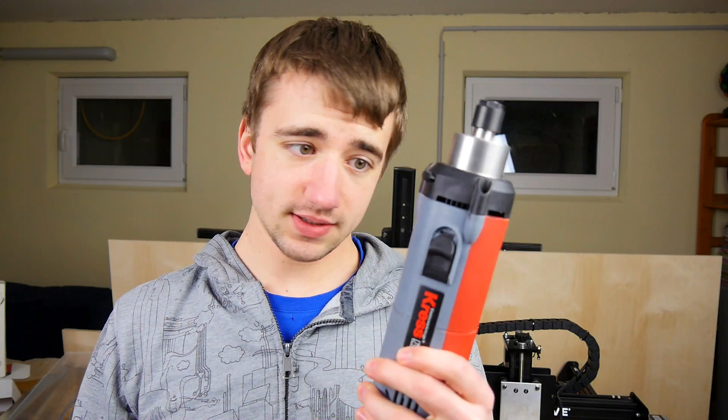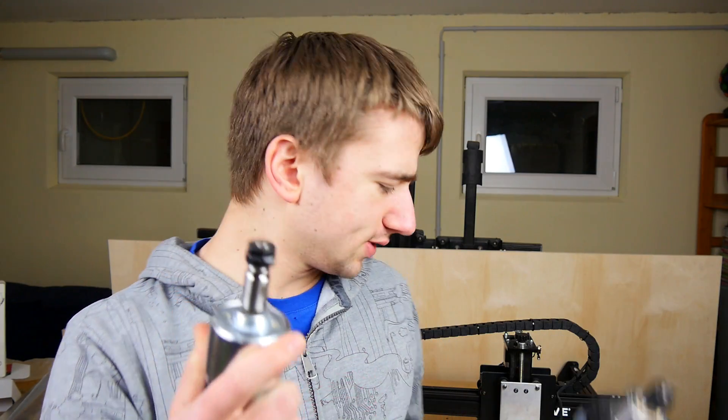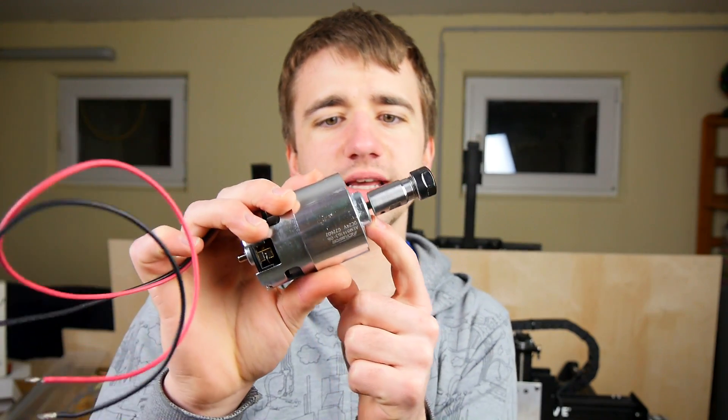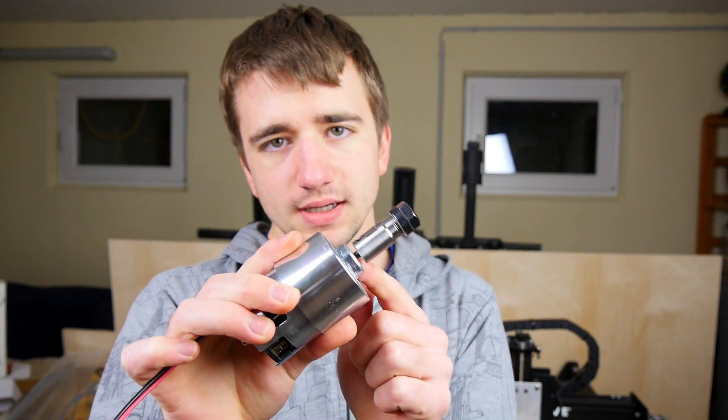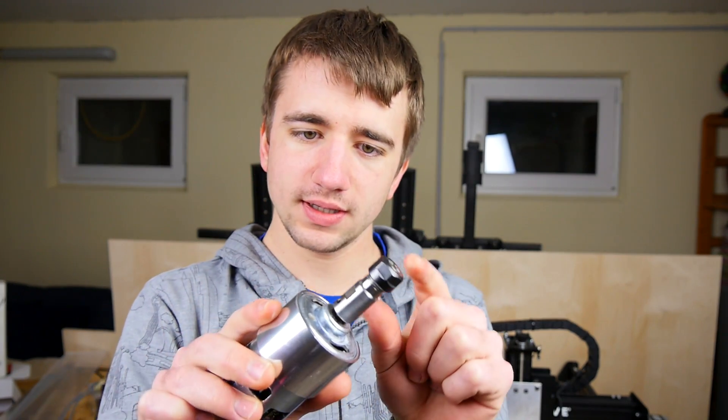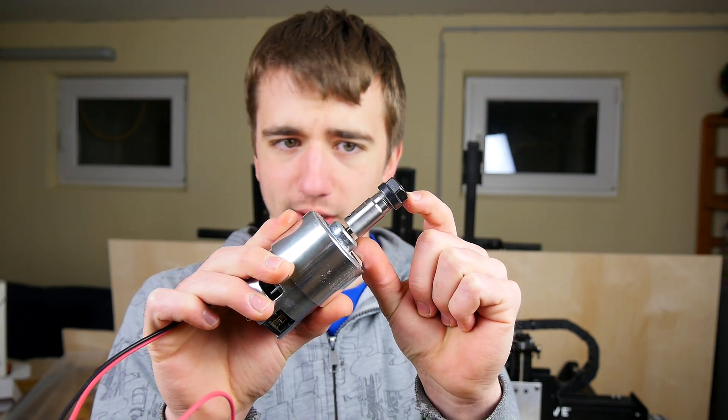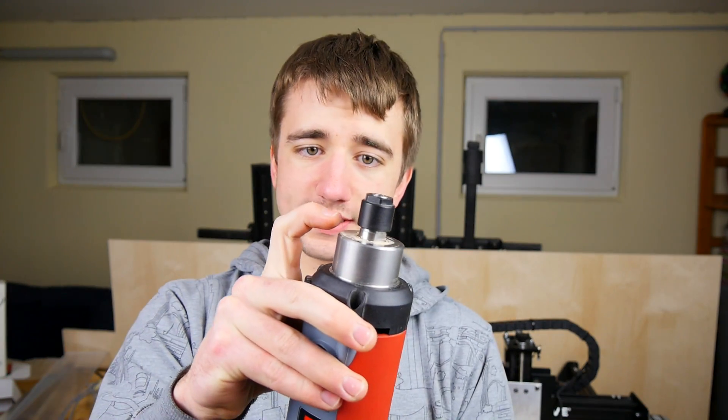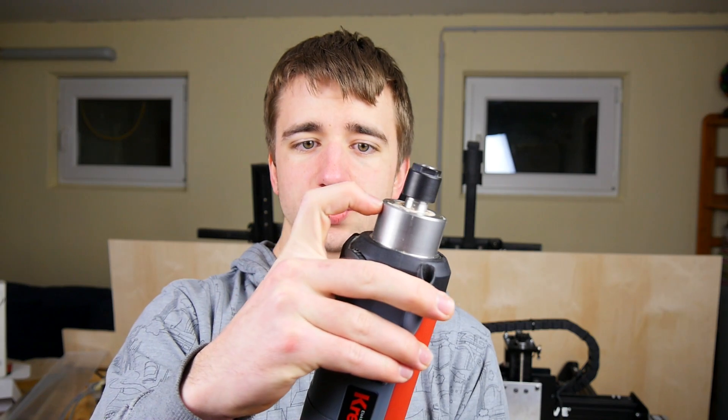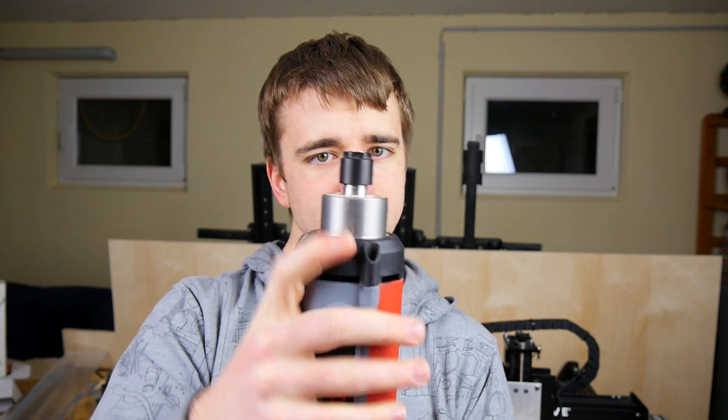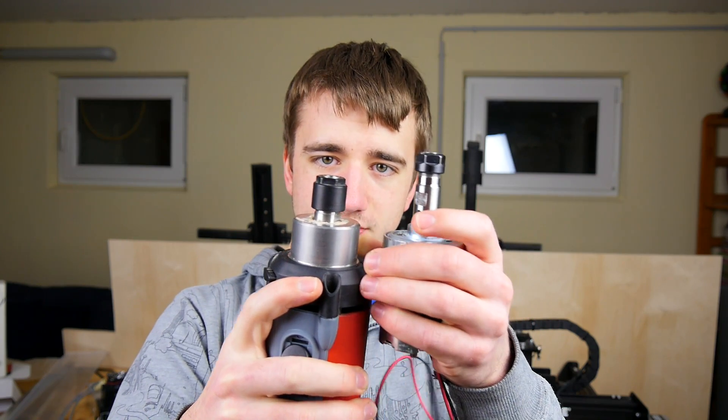The reason why this is so much better are pretty simple. Look at the shaft of this one - this is a tiny shaft like 5 or 6 millimeters with a tiny bearing. And then the distance from here to the chuck is way too much for this. This one has a 90 millimeter shaft and dual bearings here, and the distance from the chuck to the bearings is not very much in comparison to this one.